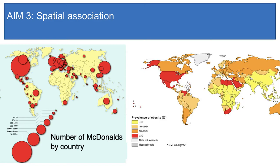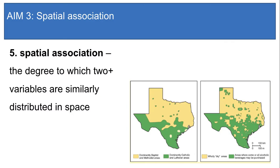That means that something else is causing obesity besides the existence of many McDonald's. Let's look at one last example. Here are two maps of Texas — the one on the left is an isopleth map and the one on the right is a choropleth map by county. The map on the left shows the distribution of different Christian denominations living in Texas: Baptists and Methodists are in beige and Catholics and Lutherans are in green. The map on the right shows parts of Texas that are dry in beige — meaning alcohol cannot be sold in those areas — while green shows places where you can buy alcohol. Is there spatial association between religious denominations and the ban on alcohol, and what might that suggest about the relationship between different denominations and the consumption of alcohol?